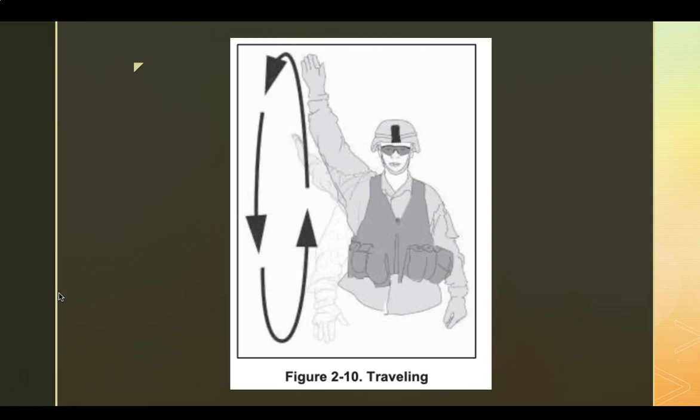Traveling. As you can see in this picture, he is moving his arm around in a circle. This means that everybody is going to start traveling, as in starting the ruck, starting the mission, start moving. You will also copy this and send it back to the battle buddies behind you.